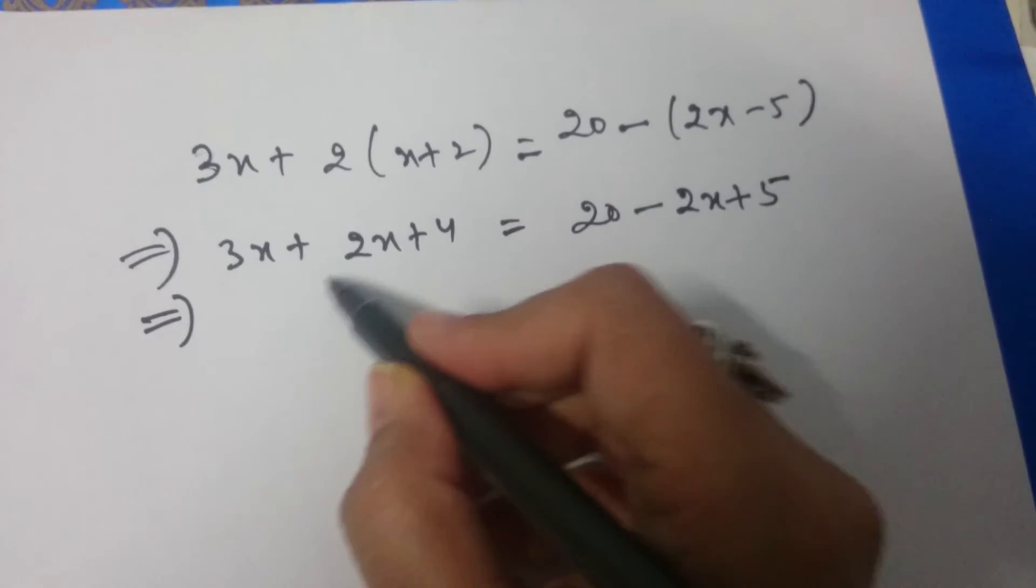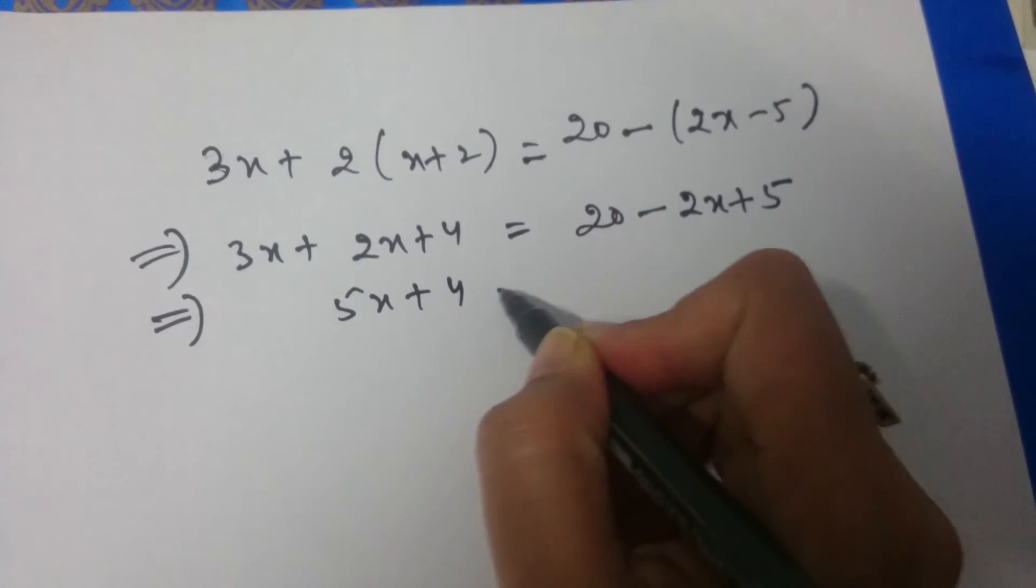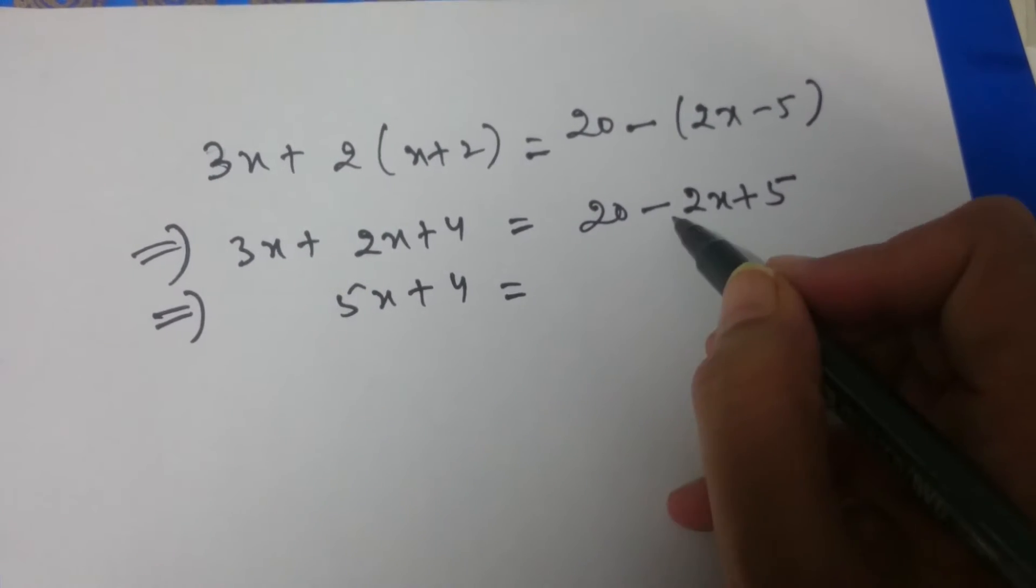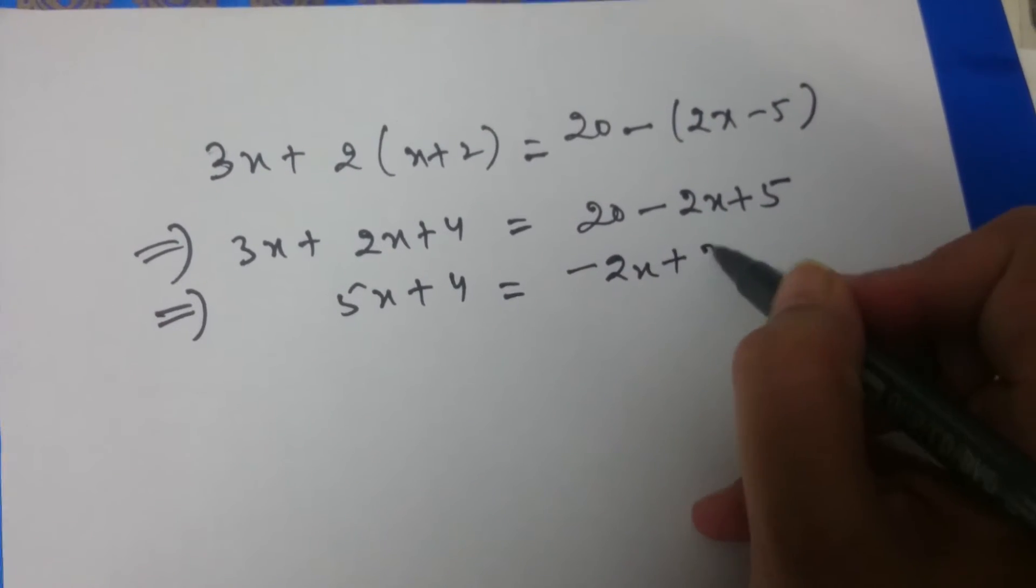This implies 3x plus 2x is 5x plus 4 is equal to minus 2x and 20 plus 5 is 25.